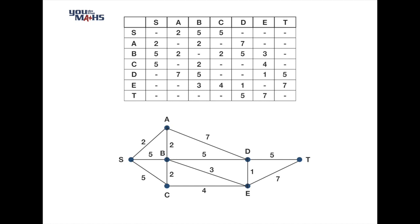Looking at the table, the vertices in the left-hand column tell us which vertex we're coming from. For example, going to row B, we can see: B to S is 5 units, B to A is 2 units, B to C is 2 units, B to D is 5 units, and B to E is 3 units. B is not connected to T, nor to itself — in fact none of the vertices are connected to themselves.